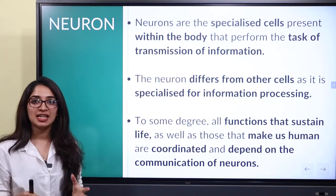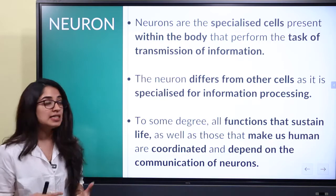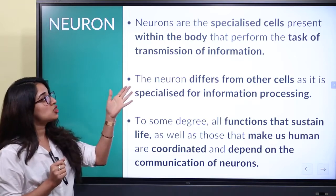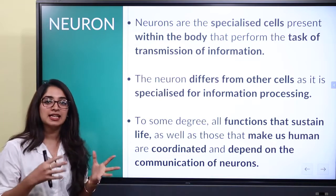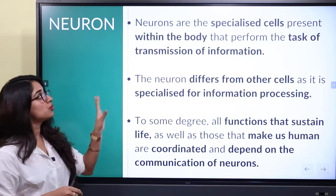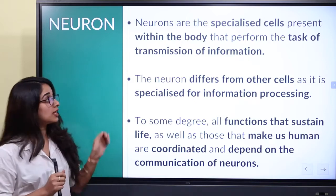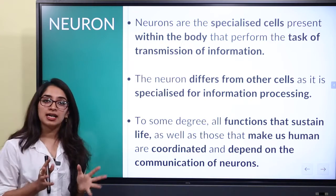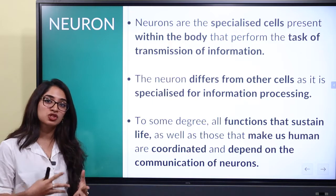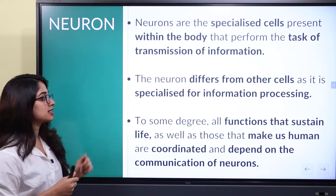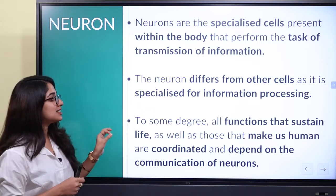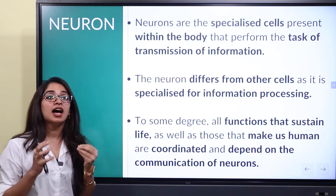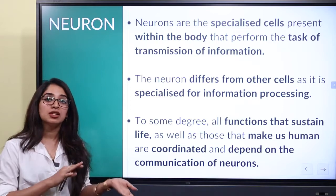What are neurons? Neurons are specialized cells that are present within our body. Their task is the transmission of information — basically, sending information within our body from one cell to another. This is an important task. Neurons differ from other cells as they are specialized for information processing. That is the distinction between neurons and other cells.